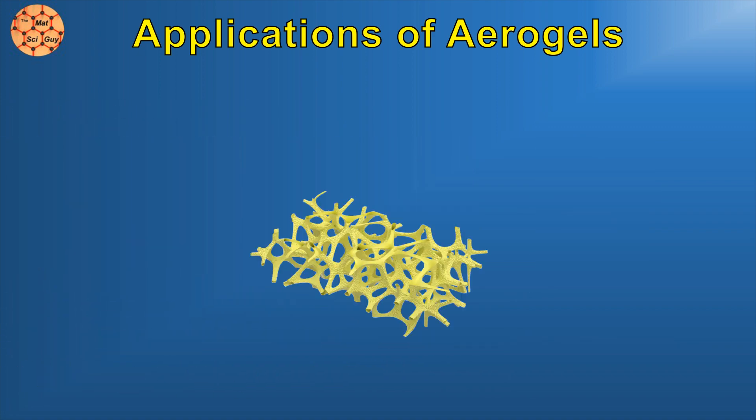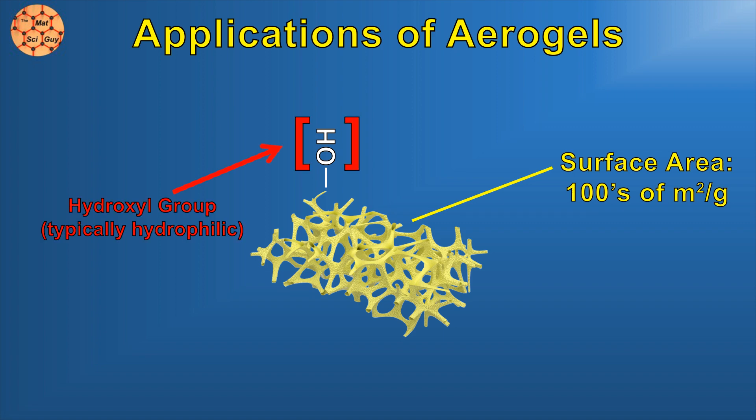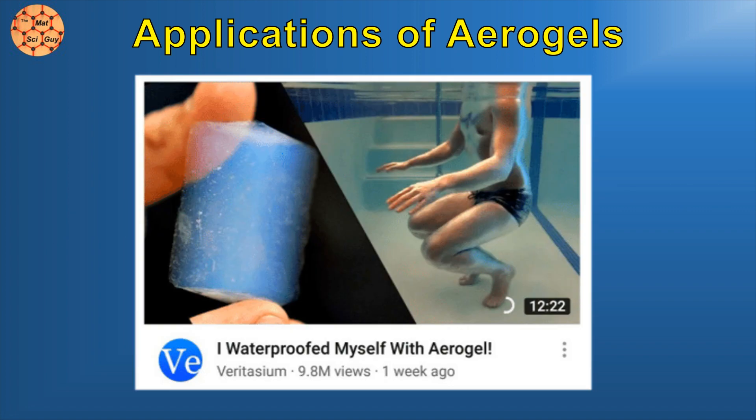Another fun aspect of aerogels is that their ultra-high surface area and tunable surface chemistry lets them do some unique things. Oxide aerogels are typically hydroxyl-terminated, but by changing the conditions to substitute these with methoxy groups, they go from hydrophilic to hydrophobic. And I mean extremely hydrophobic. That's right, folks.